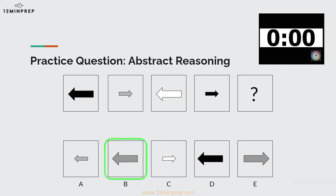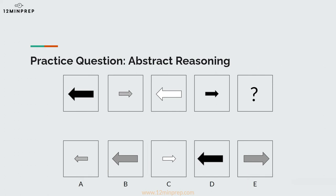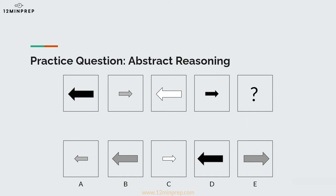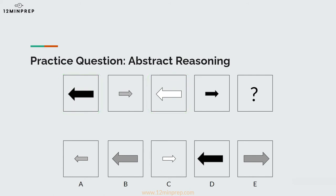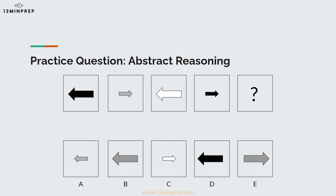The correct answer is B. There are two patterns to notice here. First, the color changes across the sequence from black to gray to white, and then back to black. This means the missing shape will likely continue this pattern and be gray. Second, there is an alternating pattern in the even and odd frames, with the odd frames containing a large left-pointing arrow and the even frames containing a smaller, right-pointing arrow. By this logic, the missing frame will continue the pattern in the odd frames, meaning it will be a large left-pointing arrow. This makes B the correct answer.